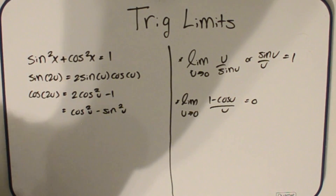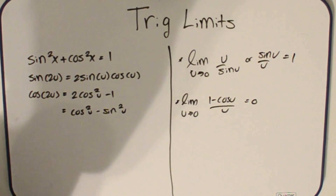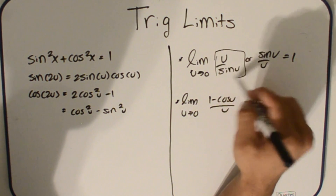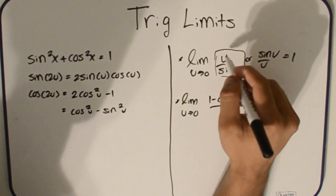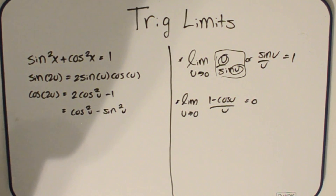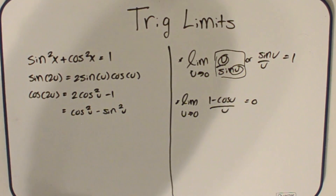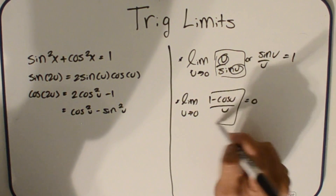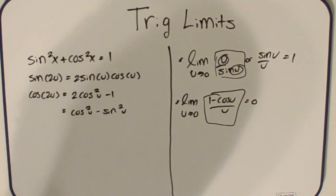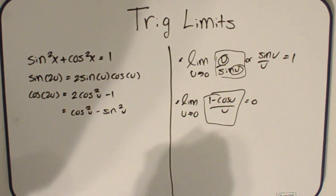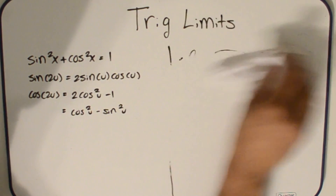Keep in mind, u does not have to be x — it can be any expression like 3x, 4x, or 5x. The only requirement for case one to work is that the u in the numerator and the u in the denominator are the exact same expression. For example, the limit as x approaches 0 of 2x over sine 2x equals 1, and the limit as x approaches 0 of 1 minus cosine 2x over 2x equals 0. With this in mind, we can jump right into the problems.